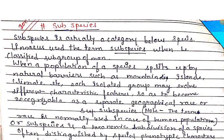Hey everyone, this is Ansley, welcome back to my YouTube channel. Today's topic is sub-species. Sub-species kya hoti hai — actually a category below species. Linnaeus used the term sub-species when he classified subgroups of men. Yeh species jo hoti hain, uske neche category aati hain, aur yeh term Linnaeus ne use kiya tha jab unhone subgroup of men classified kiya tha.